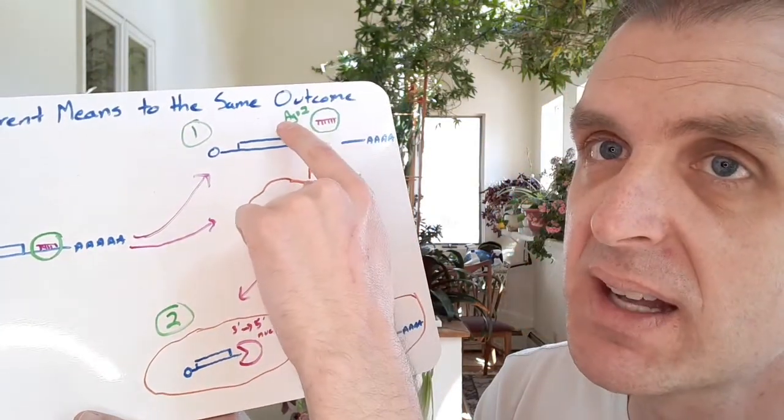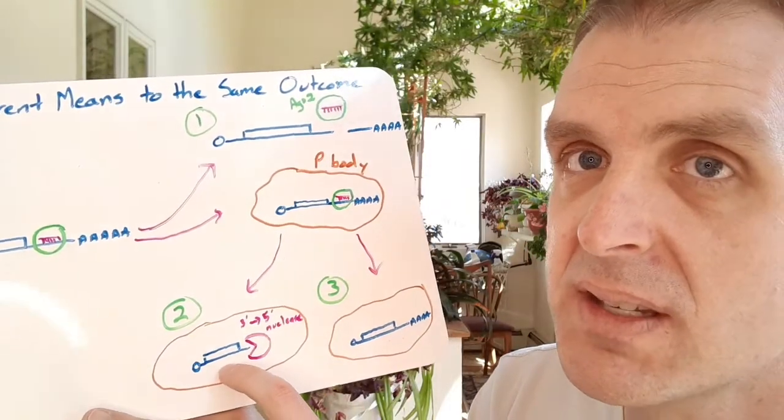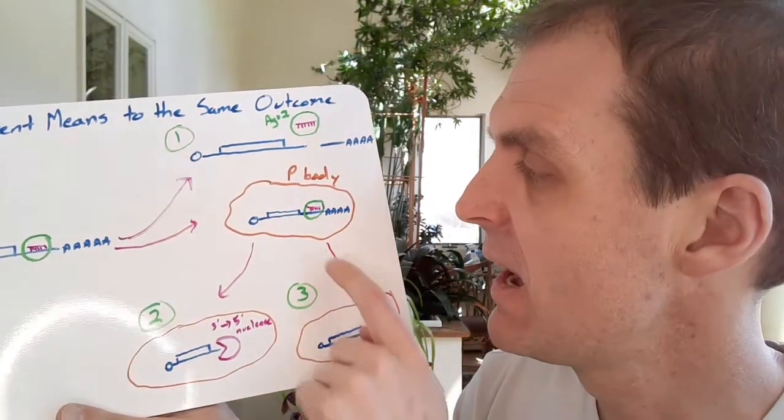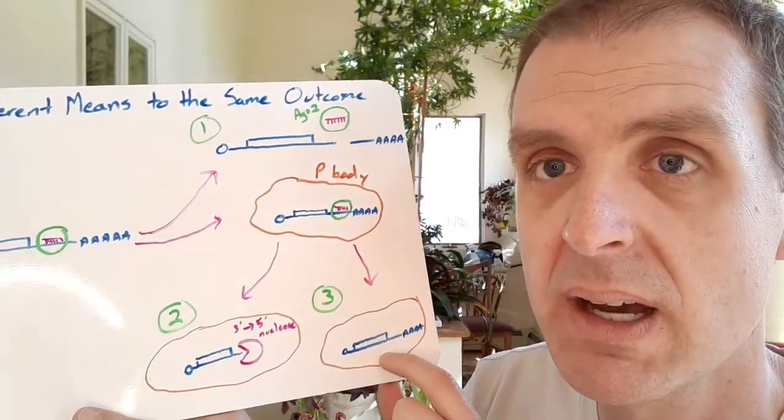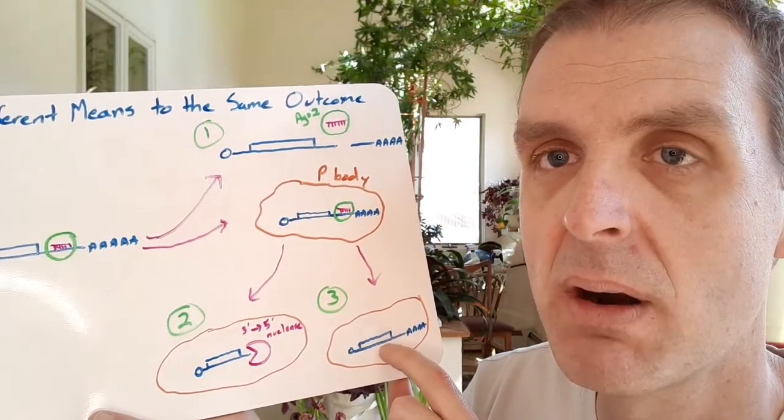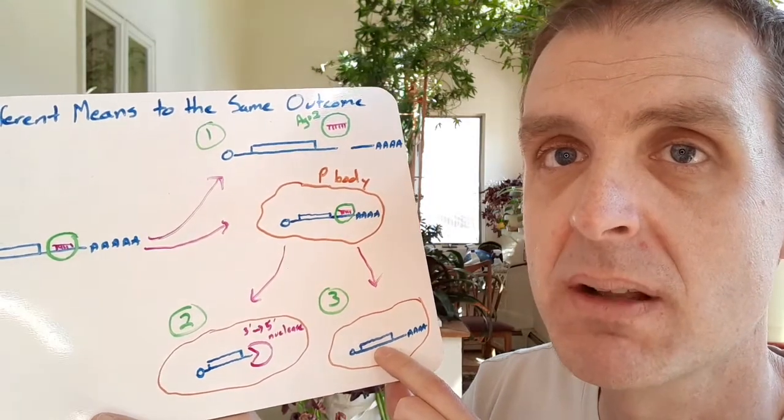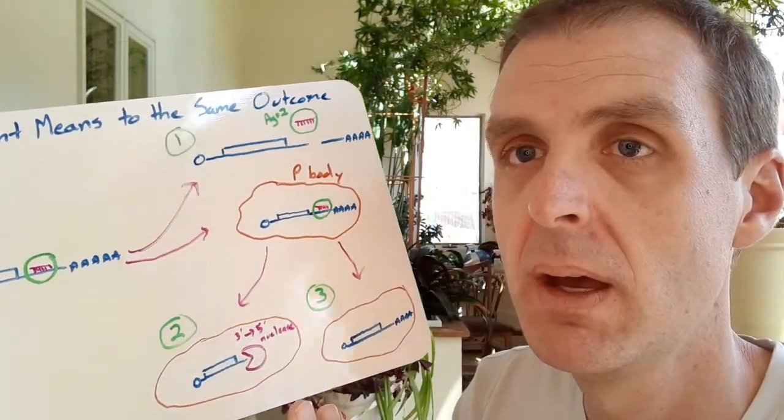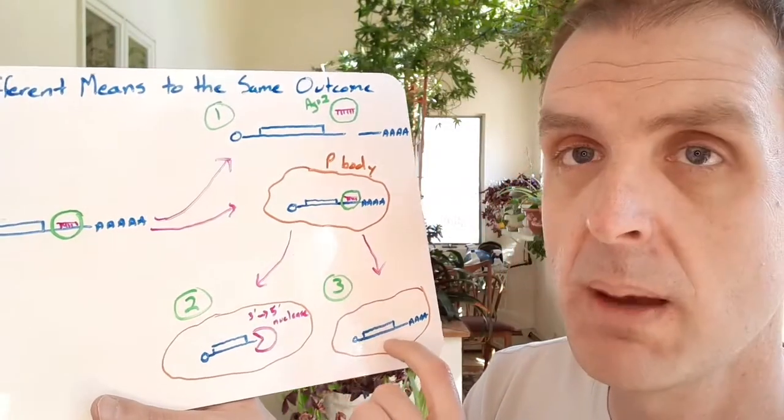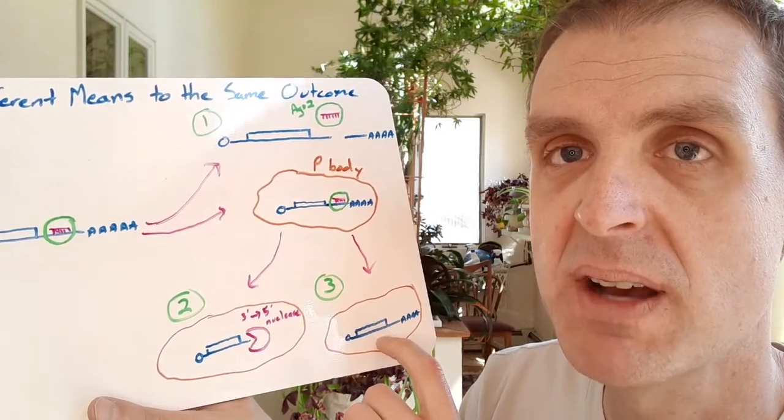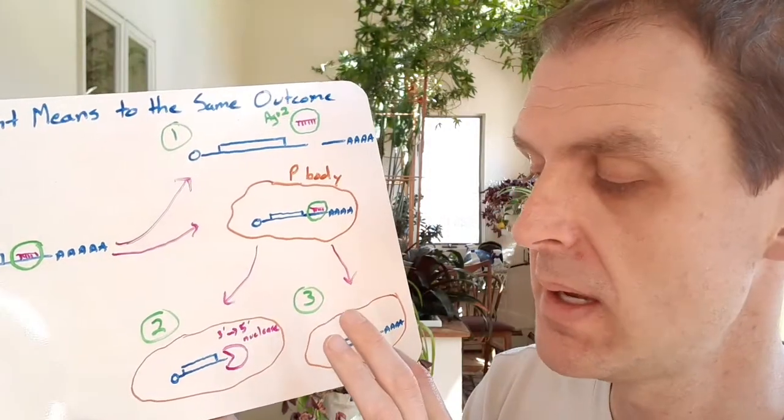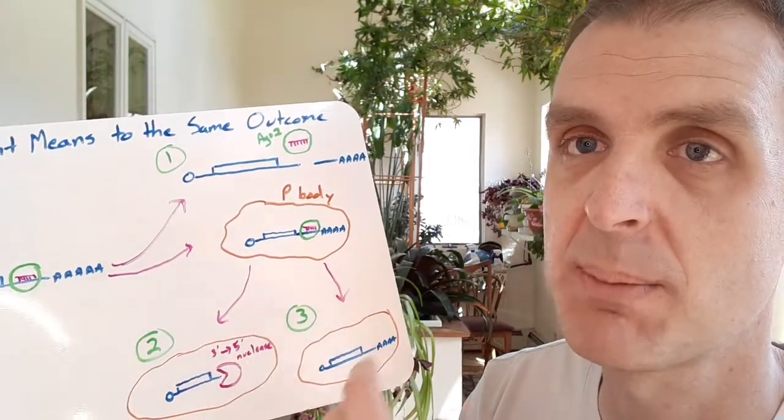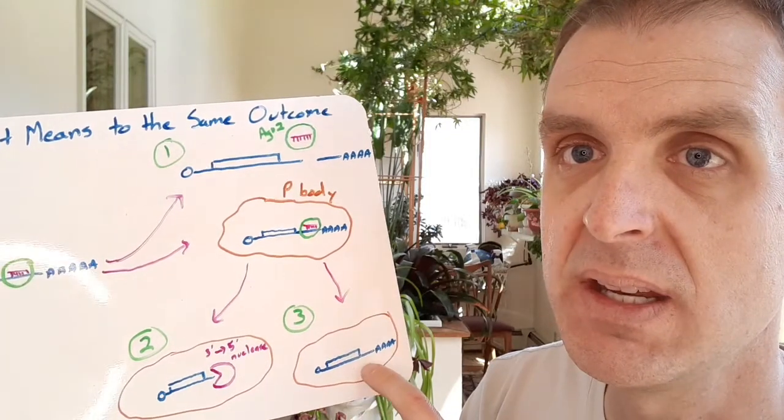One that can happen due to Argonaut's nuclease activity, another that can happen via exonuclease in P-bodies. The other thing that can happen in the P-body is that you might not get the endonuclease or exonuclease attacking the mRNA. You might just have the mRNA basically being stored there in the processing body. And these processing bodies can build up or go away depending on the situation that the cell is in. So mRNAs that are within the processing body, if the processing body dissolves for whatever reason, this mRNA could make it back out into the cell and be translated where the ribosomes are, out in the cytoplasm where the ribosomes are. You wouldn't have any ribosomes in your processing body.